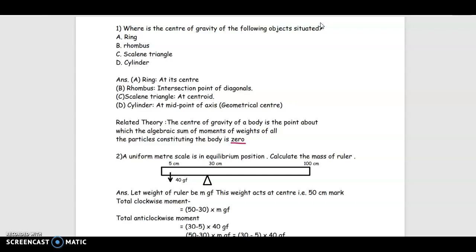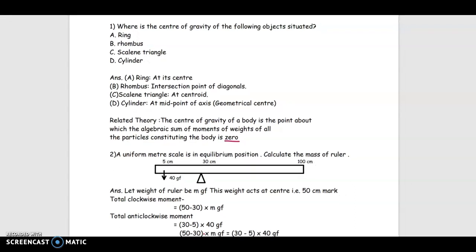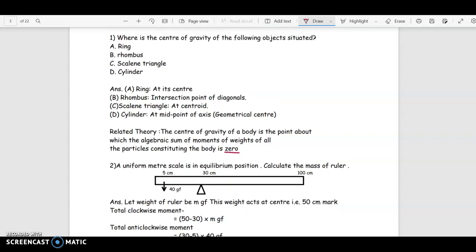Where is the center of gravity of the following objects situated? The question is ring, rhombus, scalene triangle and cylinder. For ring, the center of gravity is at its center. Suppose this is a ring, the center of gravity is here.